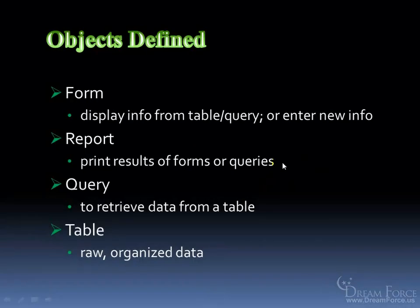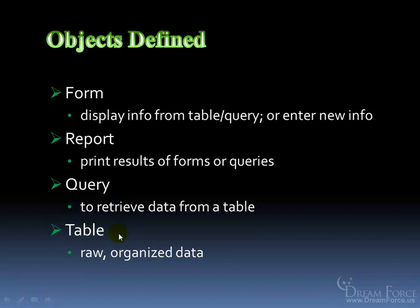To define the objects more precisely: a form displays information from a table or query, or allows you to enter new data and new records. A query is always based upon a table — it's a way to retrieve data from a table to filter in and filter out specific information. A report is the printable results of forms or queries. And without data — without information, records, names, or addresses stored — you don't have a database. Tables are the foundation of everything.